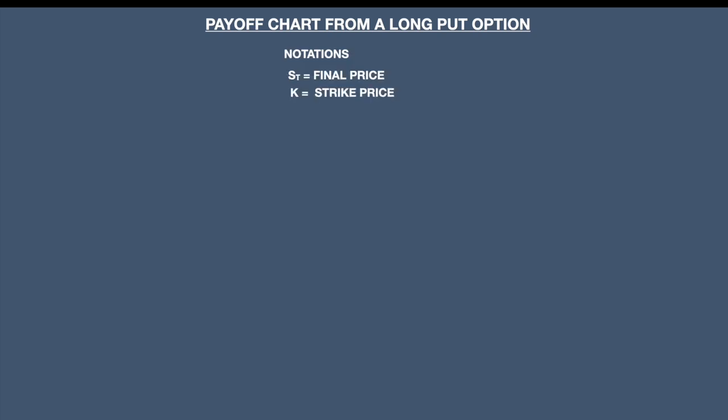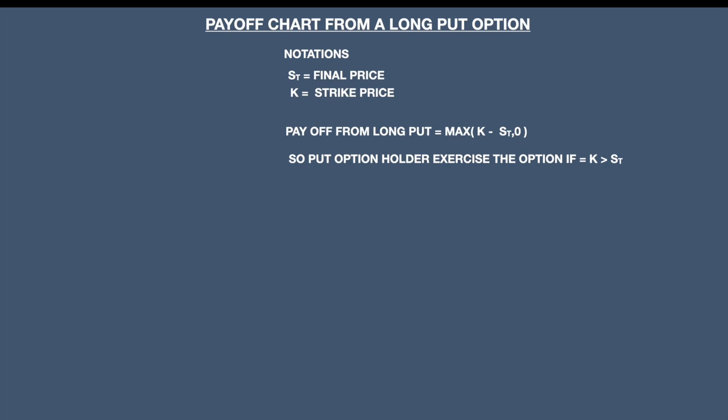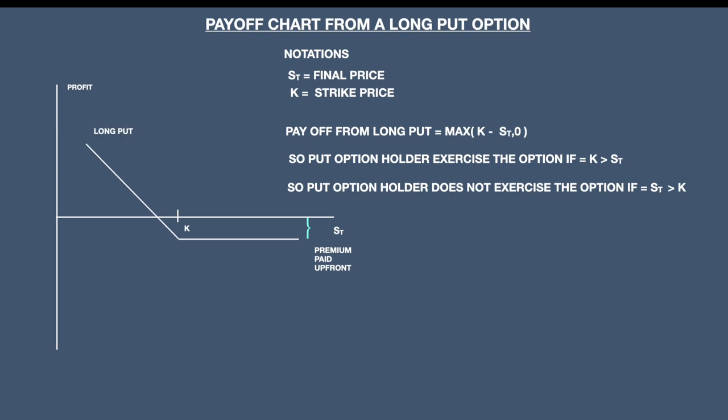Let us understand the payoff chart from a long put option. The payoff will be max(K minus ST, 0). The put option holder exercises the option if K — that is the strike price — is greater than the final price ST. The put option holder does not exercise the option if the final price is greater than the strike price. In the payoff diagram, if the stock price goes below the strike price K, the holder will make a profit. If the stock price is above the strike price K, he will lose the premium he has paid. A put option will always result in cash outflow initially.